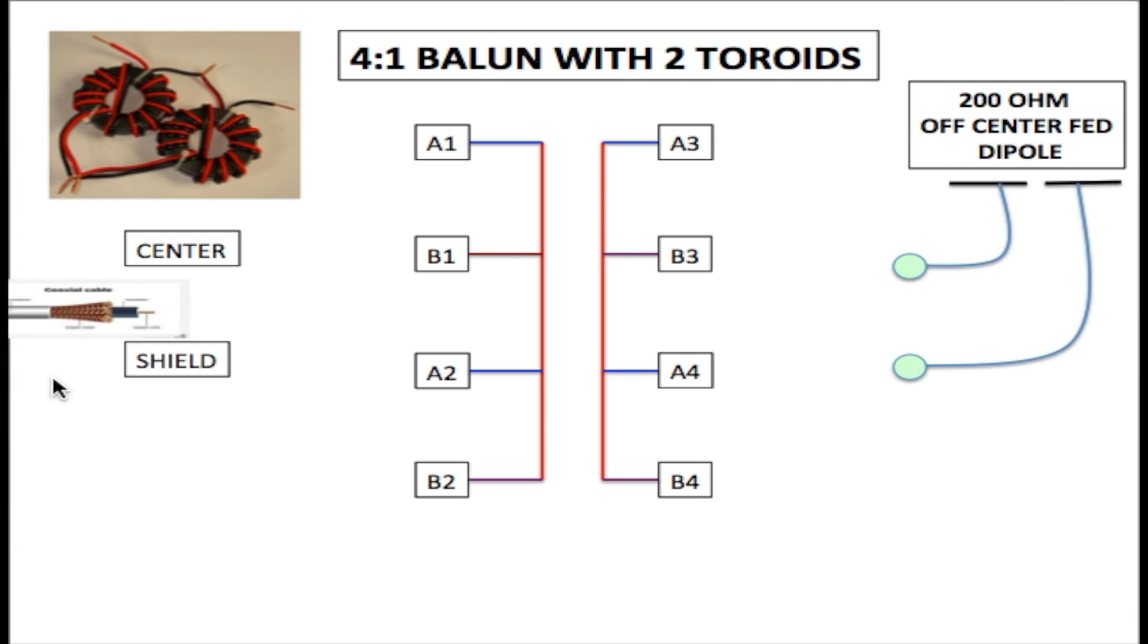Let's get started and connect everything on the input. From the center conductor on the coaxial cable we are going to A1 and A2. A1 on the first toroid and A2 on the second toroid.